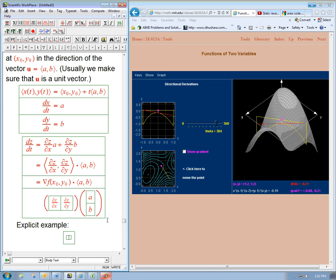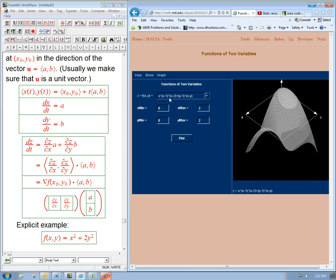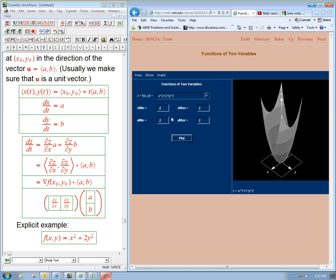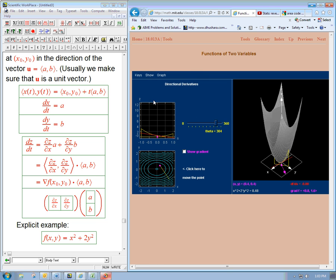Let's say f of x, y is, let's have something really simple, x squared plus 2y squared. And so I'll put that in here, x squared plus 2 times y squared. And let's see if we can have more of a plot. Just a bowl, it's an elliptical bowl, basically. So now let's go back to the directional derivative plot.